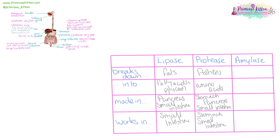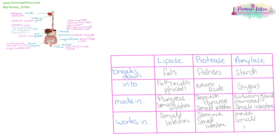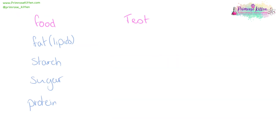Amylase breaks down starch into sugars. It works in the stomach and small intestine. So in summary, we have lipase for fats, amylase for starch into sugars, and protease for proteins.